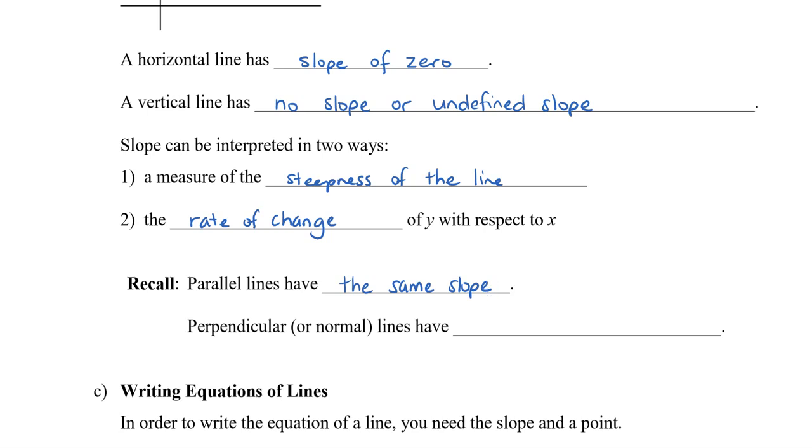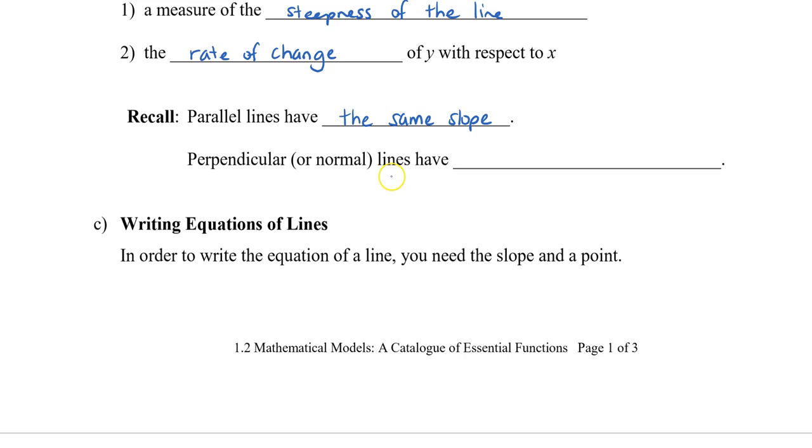Perpendicular lines, or in calculus we often call them normal lines, have negative reciprocal slopes. So that means, for example, if the slope is 1/2, the perpendicular slope, which is represented by this upside down T, would equal -2/1. So it has to be negative and the reciprocal. If you multiply these two slopes together, the original slope times the perpendicular slope will give you -1.